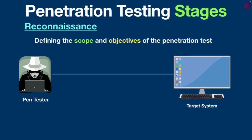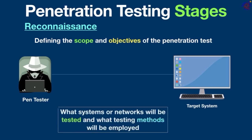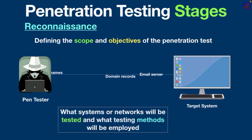Penetration testing has five stages. The first is reconnaissance. This stage involves defining the scope and objectives of the penetration test. It's really important to understand what systems or networks will be tested and what testing methods will be employed. During reconnaissance, information about the target system is gathered, including network names, domain records, and any publicly available information about the organization's infrastructure.